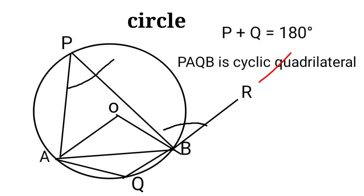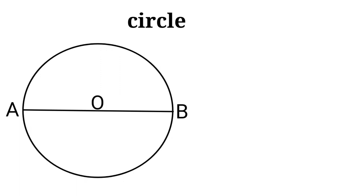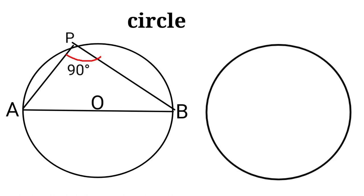When a chord AB passes through the center of circle O, it is called a diameter. A diameter divides a circle into two equal parts, each called a semicircle. Take any point P on the semicircle and join it with the two ends A and B. Then angle APB is always a right angle. Hence, the angle in a semicircle is a right angle.